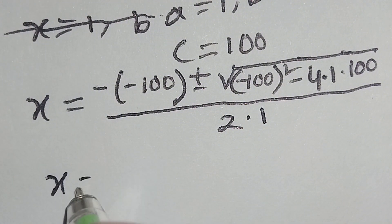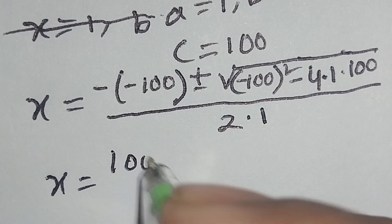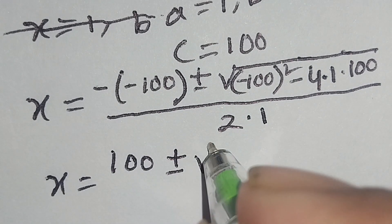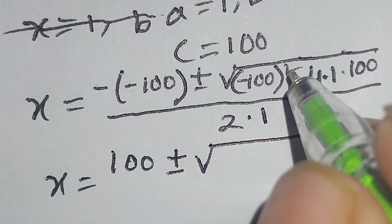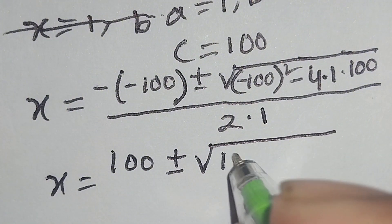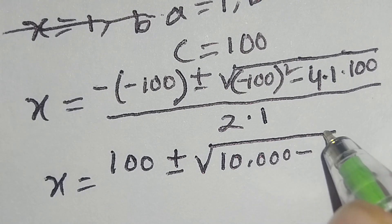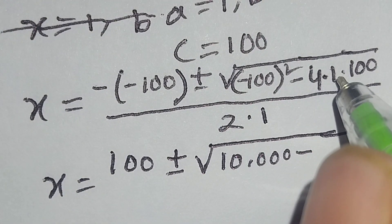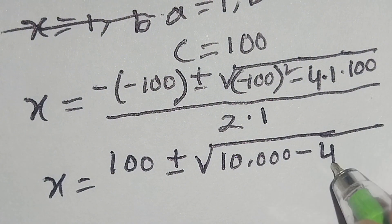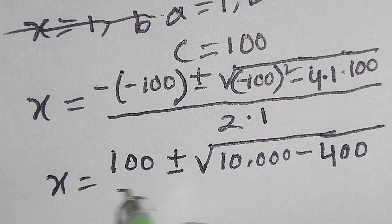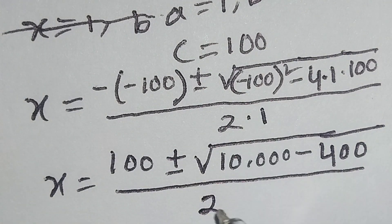So x is equal to 100 plus or minus square root of minus 100 squared minus 4 times 1 times 100, over 2. That gives x equals 100 plus or minus square root of 10,000 minus 400, over 2. So x equals 100 plus or minus square root of 9600, over 2.